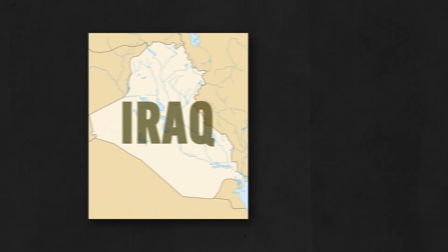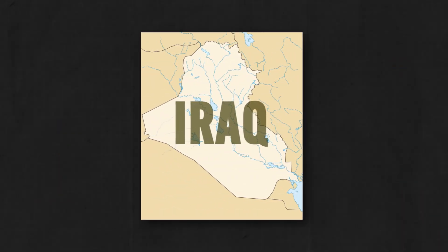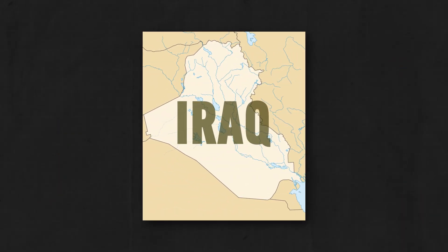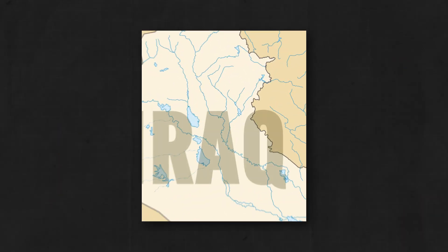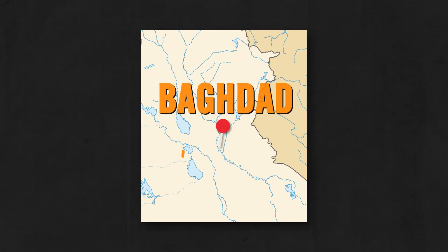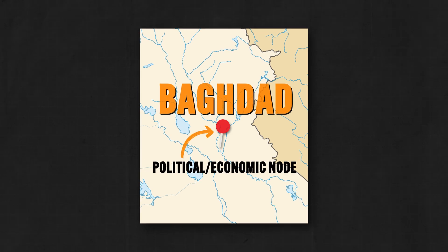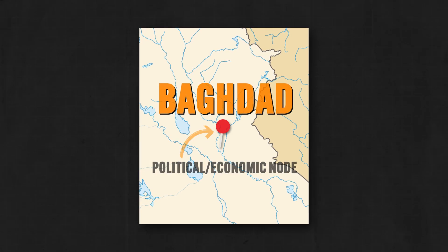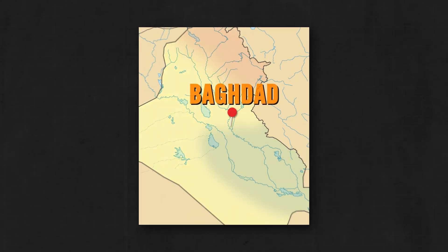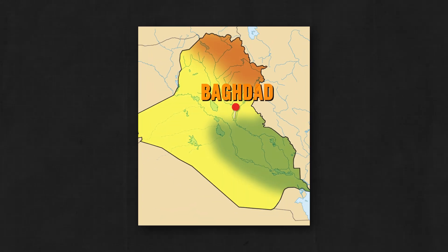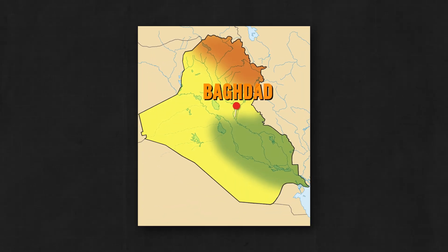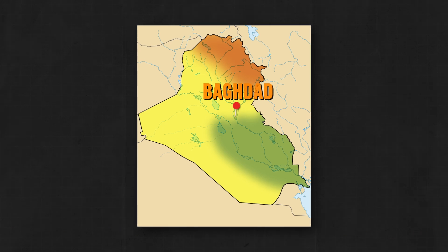Now, to further complicate things, formal and functional regions can overlap but they're often spatially distinct. Consider Iraq as an example. Iraq is a functional region with the capital city of Baghdad serving as the political and economic node. But culturally, Iraq can be roughly divided into three distinct formal regions based on ethnicity and religion.